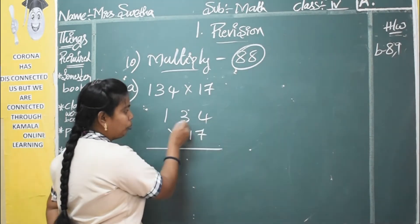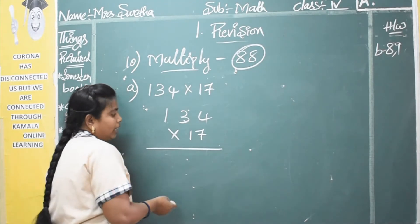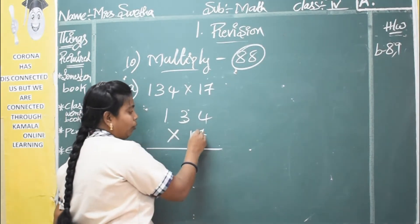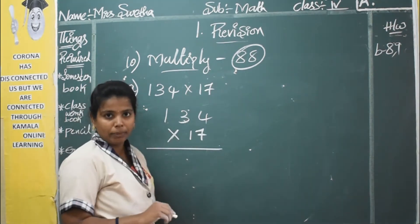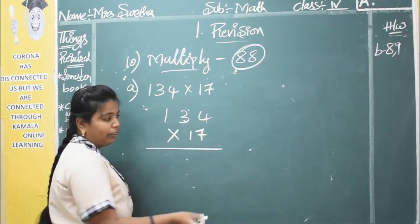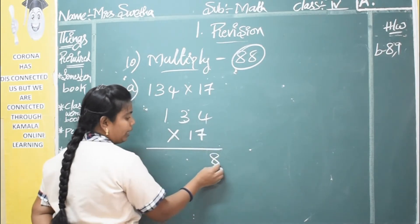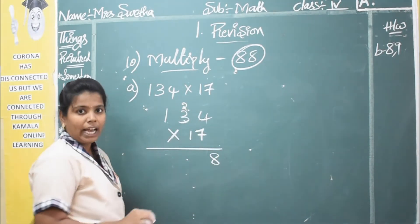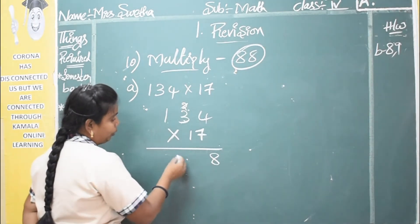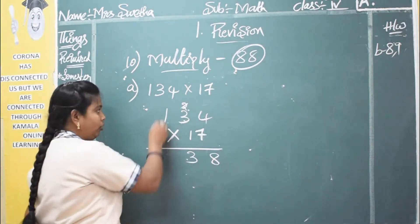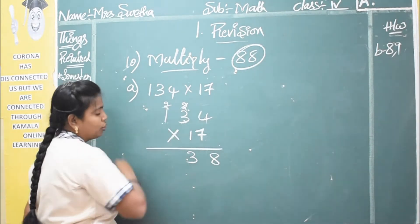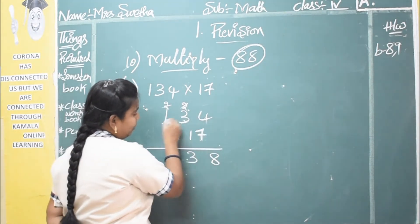So this is a double-digit multiplication. First, multiply 7 with all the numbers. Seven fours are 28 — write 8 at the last, carry 2. Seven threes are 21 plus 2 carried is 23 — write 3, carry 2. Seven ones are 7 plus 2 carried is 9 — write 9. So multiplying by 7 is finished.